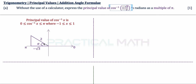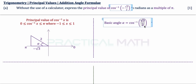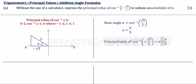We find the basic angle alpha as cosine inverse of root 3 over 2, which is the special angle π/6 (or 30 degrees). Since the question requires radians as a multiple of π, alpha equals π/6. For the second quadrant angle, we take π minus alpha: π minus π/6 gives 5π/6. So the principal value of cosine inverse of negative root 3 over 2 is 5π/6.